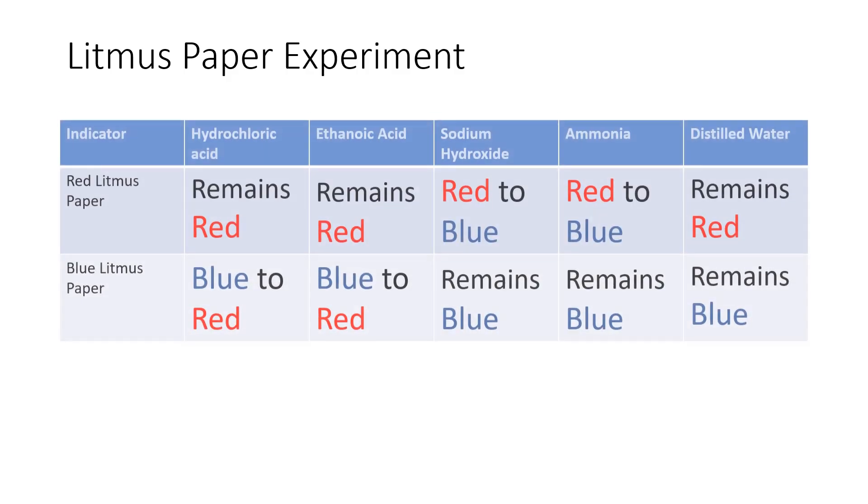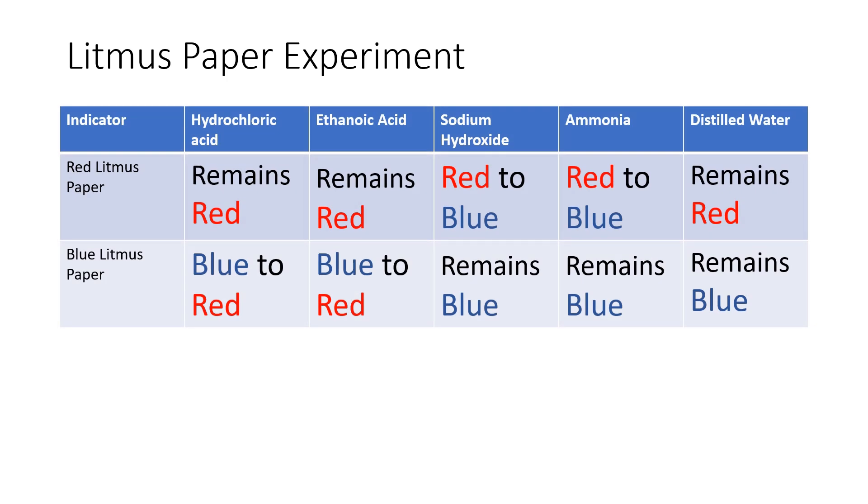Let's summarize the litmus paper experiment that we just did. Here is a table which shows the color changes. You can see that in the red litmus paper row, the hydrochloric acid, the ethanoic acid, both remain red. But when we put those acids on the blue litmus paper, they change color from blue to red.